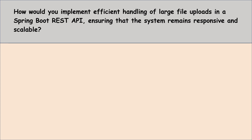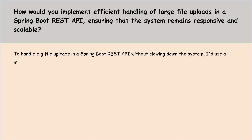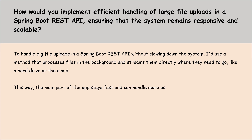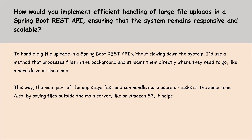Moving to the next question: how would you implement efficient handling of large file uploads in a Spring Boot REST API, ensuring the system remains responsive and scalable? To handle big file uploads without slowing down the system, I would use a method that processes files in the background and streams them directly where they need to go, like a hard drive or the cloud. This way the main part of the app stays fast and can handle more users at the same time. By saving files externally like on Amazon S3, it helps the app run smoothly even as it grows.